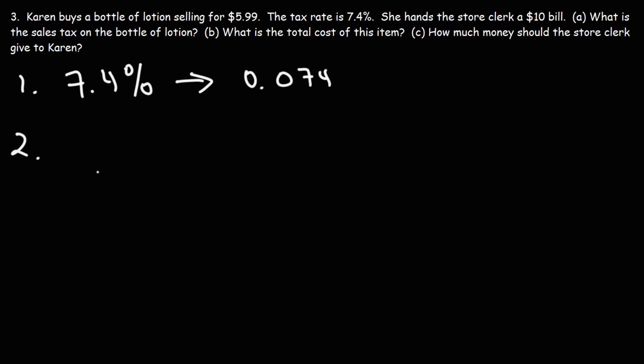Step two, we're going to multiply the original price, which is $5.99, and we're going to multiply by the tax rate of 0.074. Now, what I get is 0.44326. However, we don't really have money less than a penny. So we're going to round it to the nearest hundredth, and so the sales tax is going to be 44 cents. That's the answer for part A. That's the sales tax for purchasing this bottle of lotion.